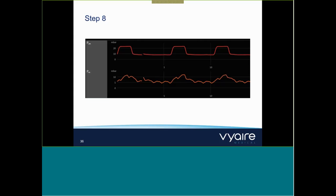If the esophageal pressure confirms your manual pressure maneuver, pull the catheter slowly into its final position. When the waveform displays cardiac oscillations, you should have reached the appropriate position in the retrocardiac space. You can see the airway pressure waveform and the esophageal pressure waveform with the cardiac oscillations — that's what you're keeping an eye out for. If they're quite flattened, review your CVP and check whether the patient is appropriately filled.